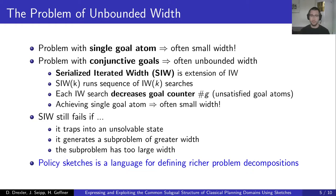Previous work has shown that a problem with a single goal atom often has small width, but problems with conjunctive goals often have unbounded width. There is an extension of the IW algorithm called Serialized Iterated Width, or SIW, which can still solve these problems. The SIW(k) algorithm runs a sequence of IW(k) searches, each decreasing the number of unsatisfied goal atoms. However, SIW can fail: for example, if it traps into an unsolvable state, generates a sub-problem of greater width, or achieves a goal atom that must later be undone to achieve the overall goal. This is where policy sketches come into play.